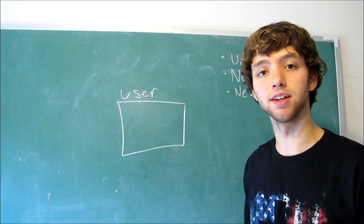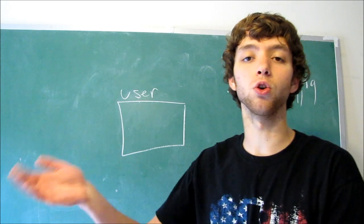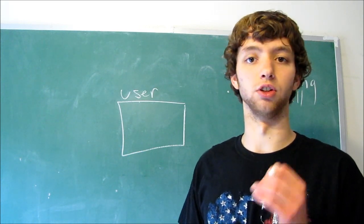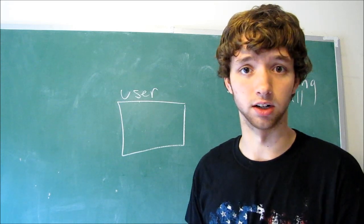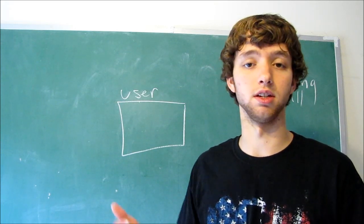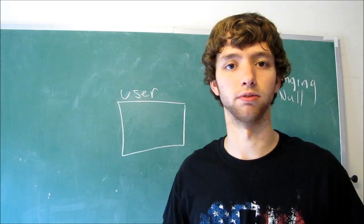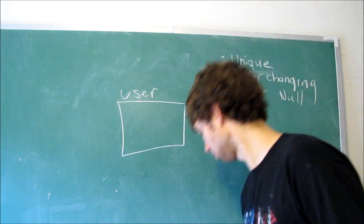So if we give it an index, and we order that data in a way that the database knows how to find certain, like it could know exactly where the C's are, well then it can go straight to the C's, grab all the Calebs, and boom, it's done. It's like super fast. That's kind of how an index works.